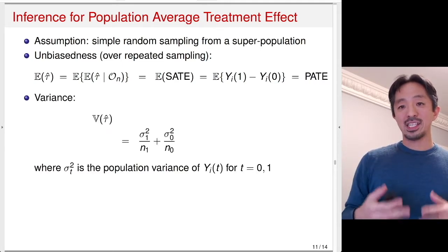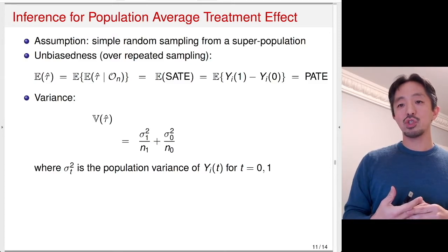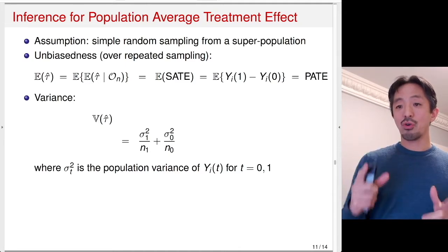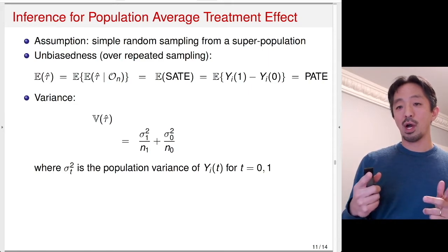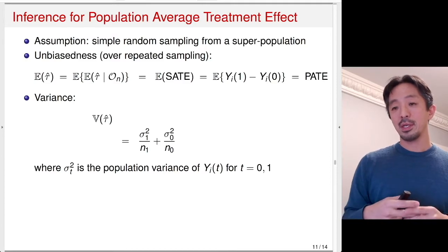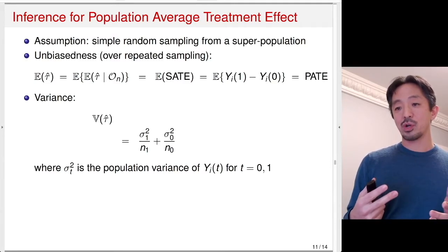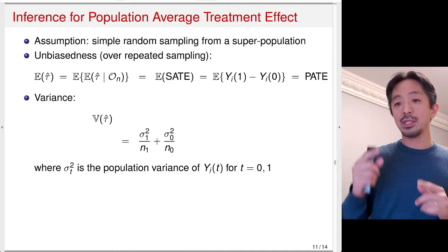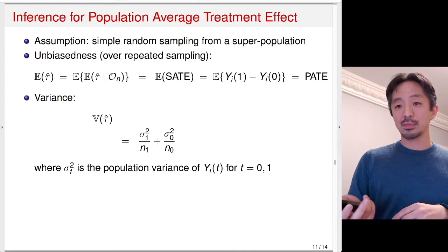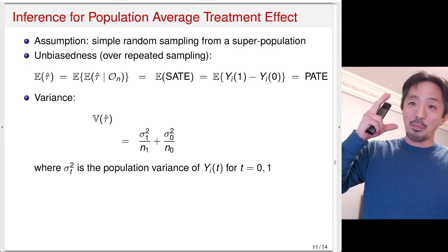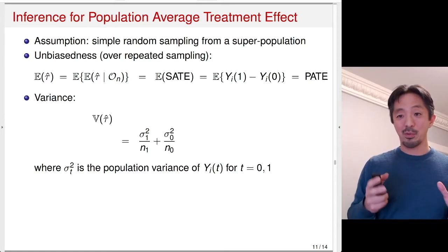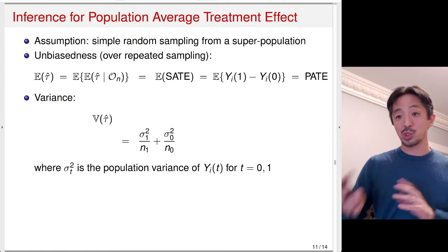We can proceed in the same fashion to show that the variance of tau-hat is equal to the usual variance estimator: sigma-1-squared over n1 plus sigma-0-squared over n0, where sigma-1-squared is the population variance of Y(1) and sigma-0-squared is the population variance of Y(0). We estimate this using the sample to estimate population variance of potential outcomes. It turns out that for inference for the population average treatment effect, the usual variance is the unbiased estimate of the right quantity — the exact variance, not a conservative estimate.